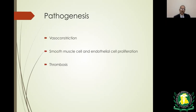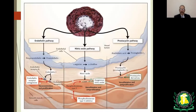The pathogenesis of pulmonary hypertension involves three things: vasoconstriction, smooth muscle cell and endothelial cell proliferation, leading to narrowing of pulmonary arterioles, slow blood flow, and thrombosis. Three pathways are involved: the endothelin pathway, where stimulation of endothelin receptors leads to vasoconstriction.